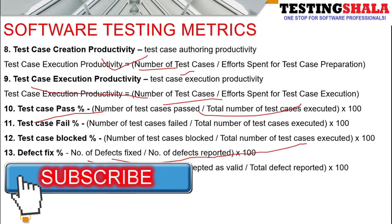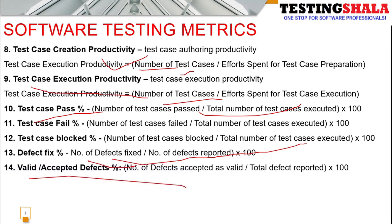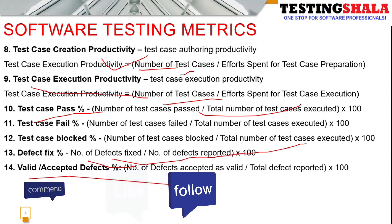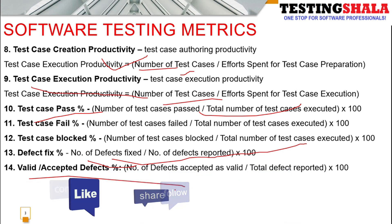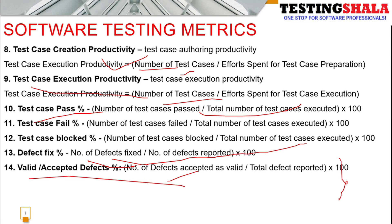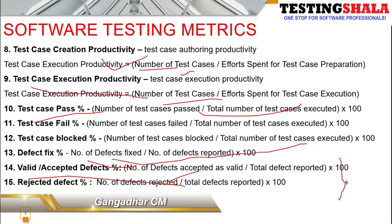The fourteenth metric is valid defect percentage. Testers can raise hundreds of defects, but if many are rejected, this metric helps evaluate quality. The formula is: number of defects accepted as valid divided by total number of defects logged by the tester. For example, if 100 defects are logged and 90 are accepted, then 90% are valid defects and 10% are rejected.